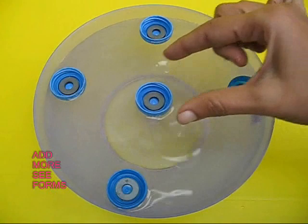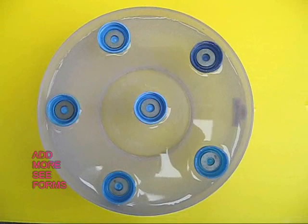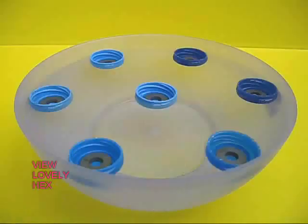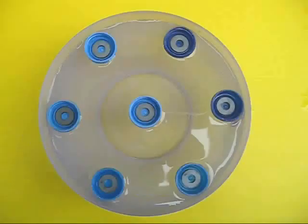Add one more and the outer periphery is like a pentagon with one in the center. Place one more and this becomes a hexagon outside with a center. This is a very elegant side view.